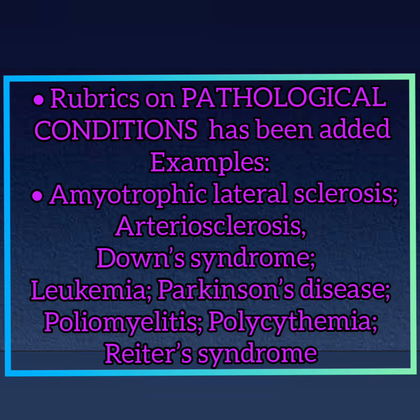Rubrics on pathological conditions have been added, including examples such as Amyotrophic lateral sclerosis, atherosclerosis, Down syndrome, Leukemia, Parkinson's disease, Poliomyelitis, Polycythemia, and Reiter syndrome.